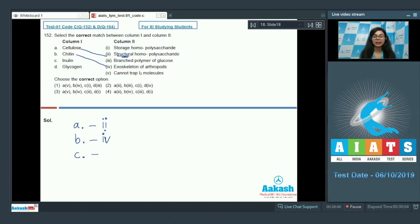It's a polymer of fructose found in the roots and tubers of dahlia and related plants. So C goes with one. And lastly, D, glycogen.